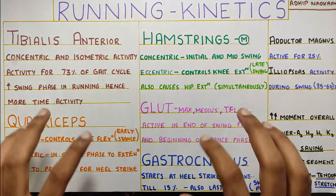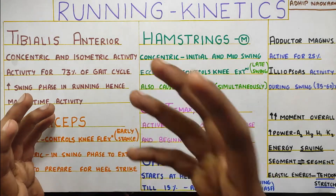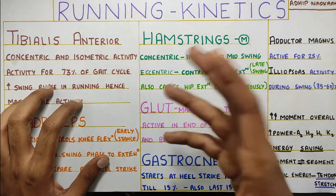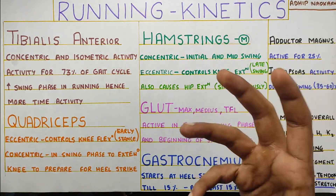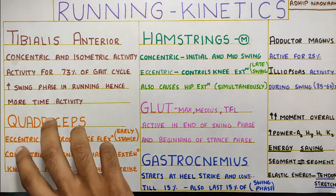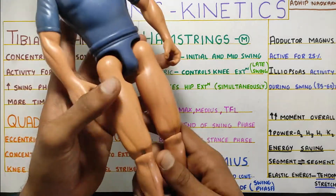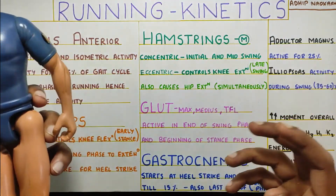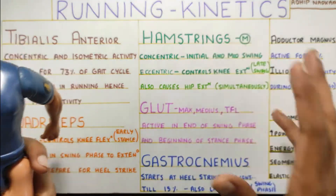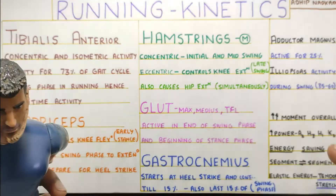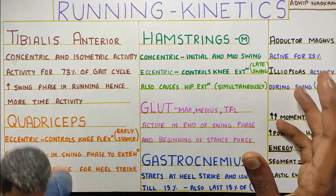In this video we are going to talk about running gait kinetics. Now kinematics we discussed in the last video, where we were speaking about the movement in the running gait. Now we will be talking about the forces that are involved. Forces are produced by the muscles, so we will be talking about your quadriceps, hamstrings, glutes, gastrocnemius and tibialis anterior — all the muscles around your knee joint, ankle and hip joint. And also some extra muscles like your adductors and iliopsoas. Finally we will conclude by talking about movement, power and energy that works in running gait.